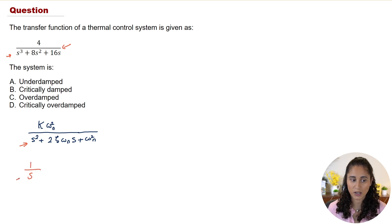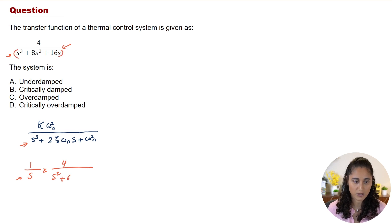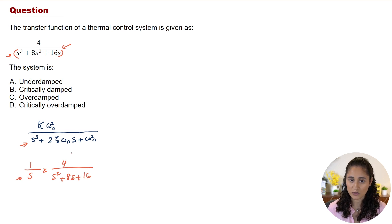So we write 1/s for the step input, multiplied by 4 divided by s² — factoring out s — giving us s² + 8s + 16. This is the step input times the transfer function, and now we're going to compare this to the reference equation.